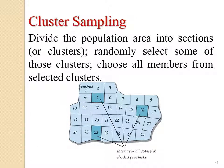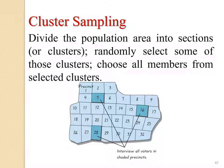Cluster sampling: divide the population or area into sections or clusters, randomly select some of those clusters, then include all members from selected clusters. For example, consider 32 states in the U.S. as cluster points, then randomly pick three clusters — say clusters 5, 16, and 28 — and interview all voters in those clusters. This type of sampling is called cluster sampling.